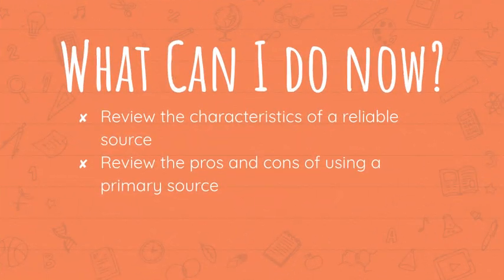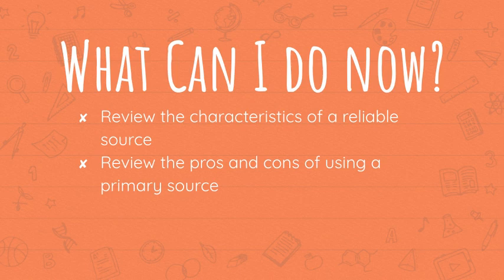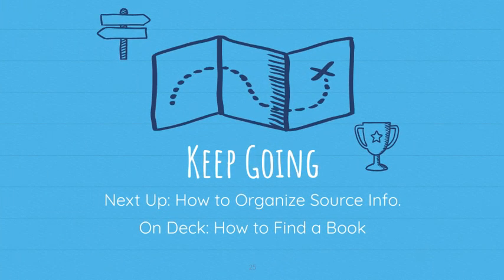So what actions can you take now? You should be able to review the characteristics of a reliable source — your teacher may even quiz you on those. You should also review the pros and cons of using a primary source and be familiar with what a primary source is. As always, consult your assignment schedule or check with your teacher to determine exactly what is expected of you next. As we continue down the path to writing a great research paper, we'll talk about how to organize source information and then how to find a book.